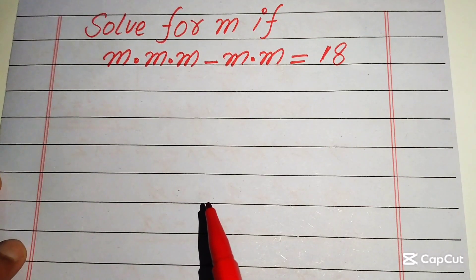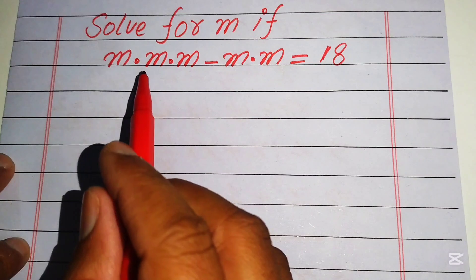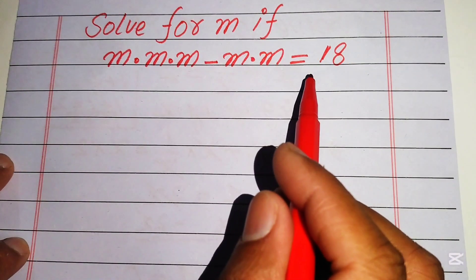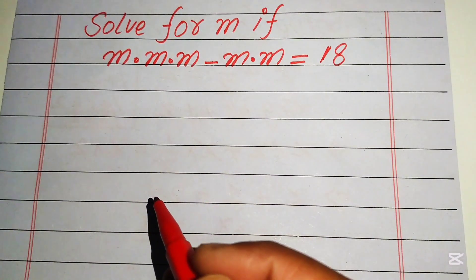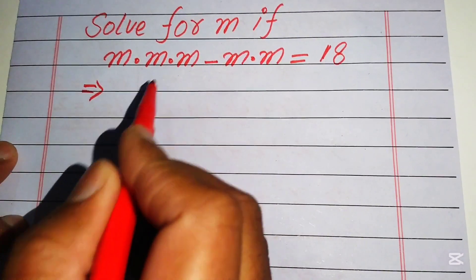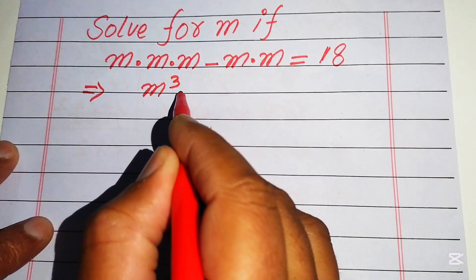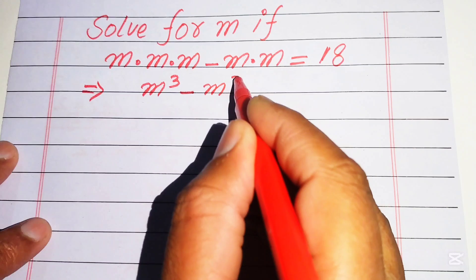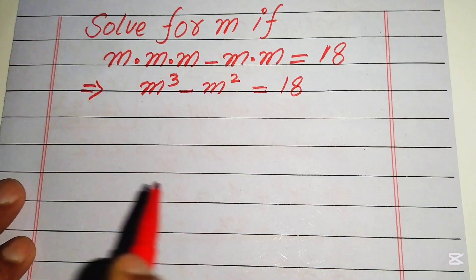Hello everyone. How to solve this nice algebra problem. Here we have m times m times m minus m times m equals 18. We solve this problem for the values of m. This m is multiplied three times so we write it as m cubed, minus this m multiplied two times so we write it as m squared, and this equals 18.